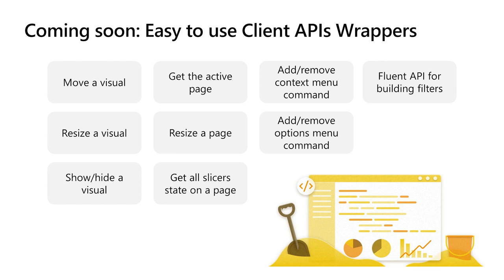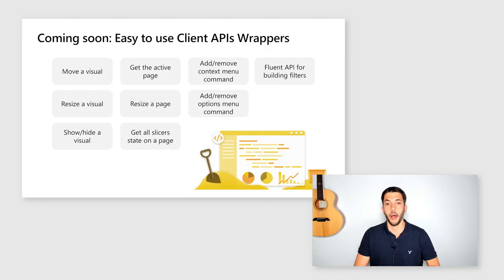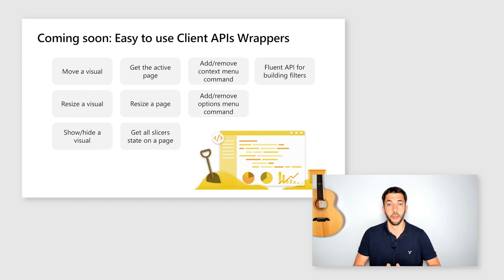Before we finish, I want to share what is coming soon. Soon we will have easy-to-use client API wrappers that will allow you to move a visual, resize a visual, and show and hide a visual without setting the whole custom layout object and updating settings. We'll also have functions to get the active page, resize the page, and get all slicers state on a page — something you asked for a long time. Next, we'll have the option to add and remove context menu and options menu commands without updating the whole settings object. And last but not least, we have the Fluent API for building filters, which should really help you when setting filters or setting slicer state.